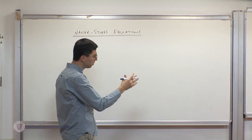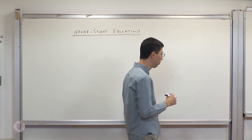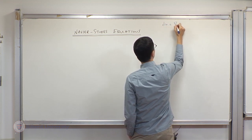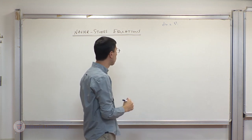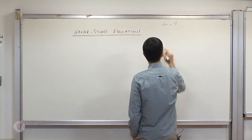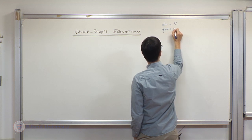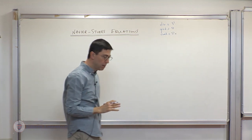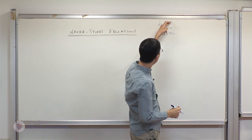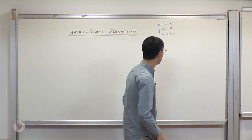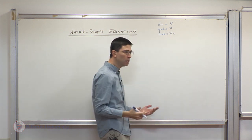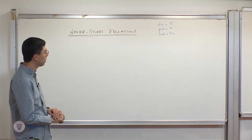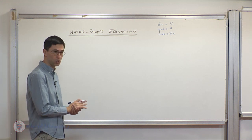Sticking to the accepted notation of fluid dynamics, I'd like to use the symbolic notation: instead of writing divergence, gradient, or curl with explicit configuration labels, I will simply write them symbolically. The reason is that in fluid dynamics there is only one coordinate system or configuration, and that has to do with the spatial one.